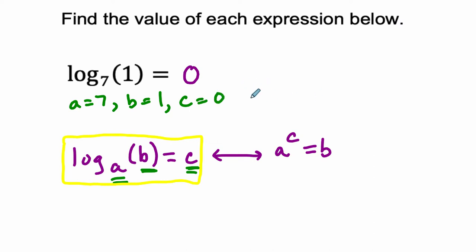So to figure this out, right, this is just saying, by the way, that if we have 7, base of 7, raised to a power of 0, that equals a result of 1. Anything, any non-zero number to the 0 power is 1.